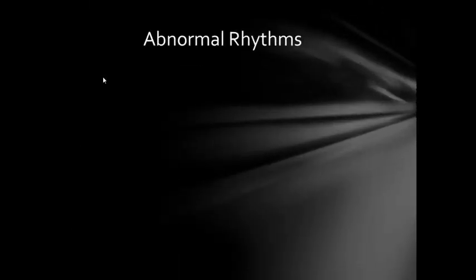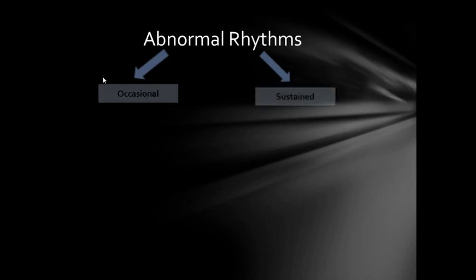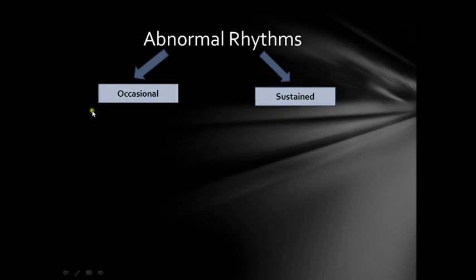So for abnormal cardiac rhythms, the most characteristic thing is that the RR interval is changeable — it is not constant. Whenever you have a changeable RR interval, the next thing you look at is whether it is occasional or sustained. Occasional means you get just one abnormal beat, and right after that it returns to the normal sinus rhythm.